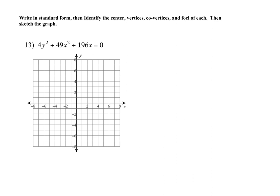Now we want this in standard form. We know this is an ellipse because both variables are squared. When both variables are squared, you want all constants on one side and just variables on the other side. You also want to group your variables — x's first, then y's, because that's how all the formulas are done. Then simplify using completing the square. So I have 49x² + 196x added to 4y², and that equals zero.